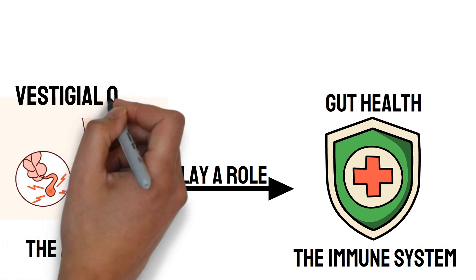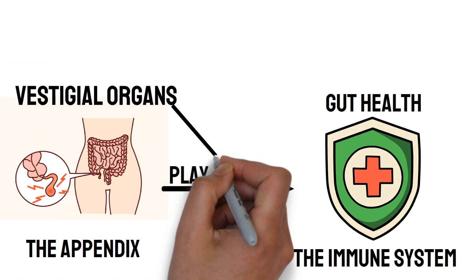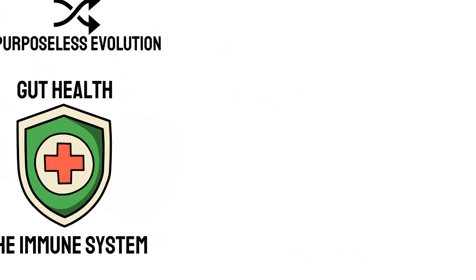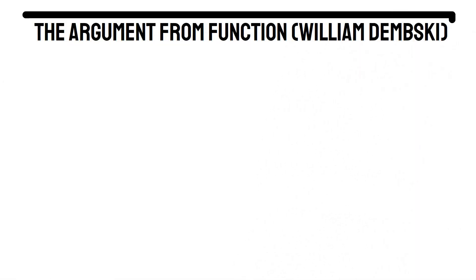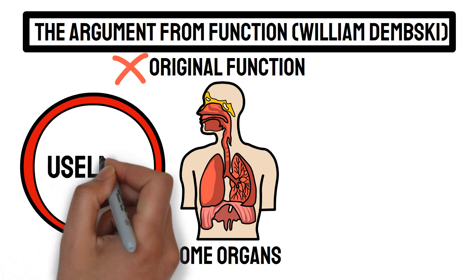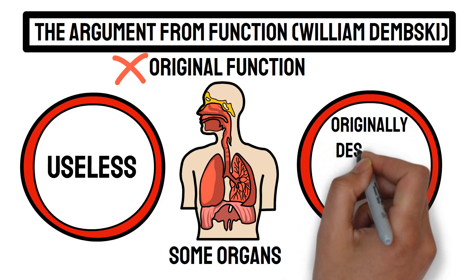The discovery that vestigial organs have purposes support the argument for design rather than random purposeless evolution. Then there's the argument from function. Even if some organs no longer serve their original function, this does not prove they are useless or that they were not originally designed with a purpose.